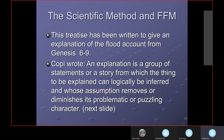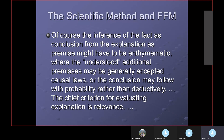Copi wrote that an explanation is a group of statements — or a story — from which the thing to be explained can logically be inferred, and whose assumption removes or diminishes the problematic or puzzling character. So it solves some problems — not every problem, but some. He goes on and says the entrance of the fact as conclusion from the explanation as premise might have to be in the enthymeme form, meaning it's an incomplete argument where we have to supply the part that's understood. He's discussed enthymemes and additional premises earlier in the book.